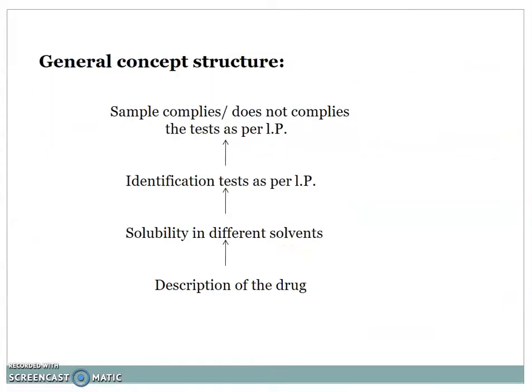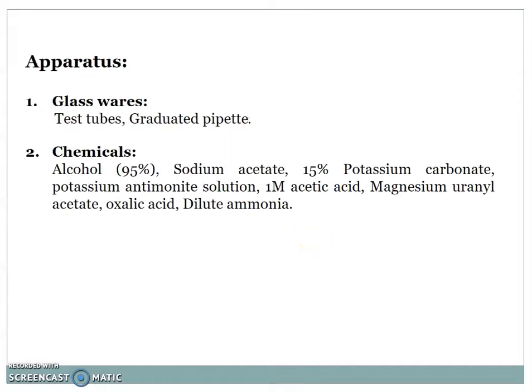The general concept structure: First of all, we have to perform description of the drug, that means it involves its nature, color, odor, and taste, the solubility in different solvents, and identification test as per Indian Pharmacopoeia. After performing all these tests, we determine whether the sample complies or does not comply the test as per Indian Pharmacopoeia.